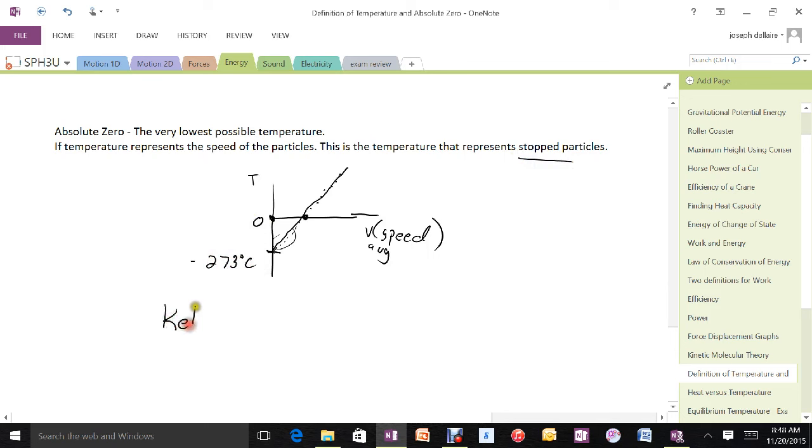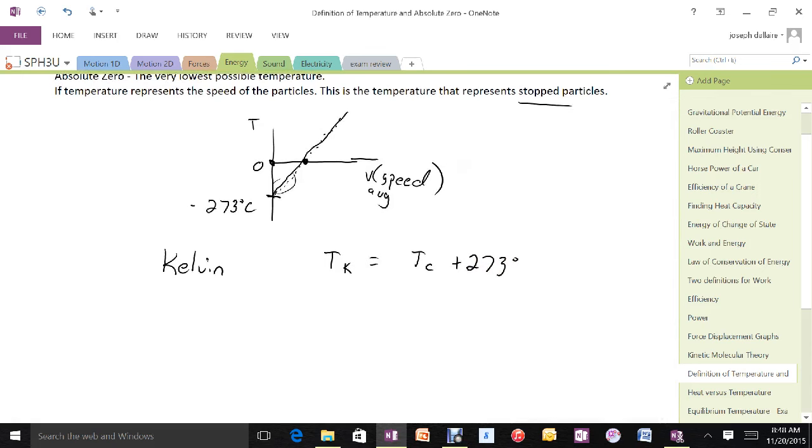So Kelvin made the decision to reset the temperature scale so that the temperature in Kelvin would be equal to the temperature in Celsius plus 273 degrees. What that did was it kept the size of a degree the same, but it reset it so that now temperature equals zero corresponded with absolute zero or the temperature where the particles stop.